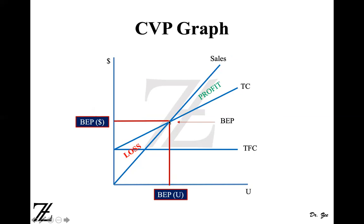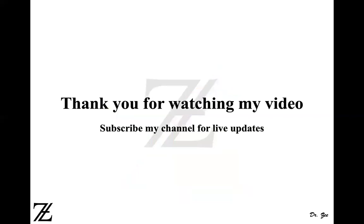Anything above the break-even point is a profit region — as you can see the green writing here that says 'profit,' because it is beyond the break-even point. Anything below the break-even point is a loss region. You will lose money if you sell any unit below this break-even point, and you will make money if you sell any unit above the break-even point. That is our cost volume profit graph. Thank you for watching. Please subscribe to my channel for live updates.